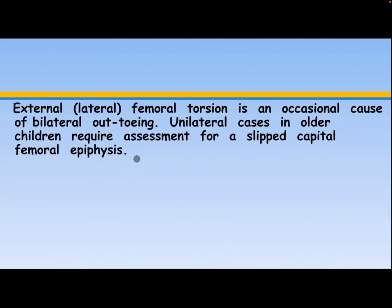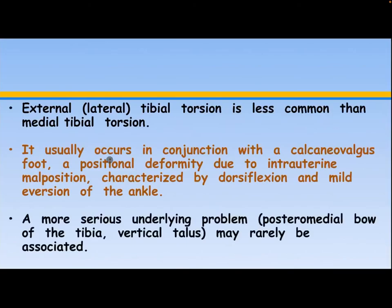External or lateral femoral torsion is an occasional cause of bilateral out-toeing. Unilateral cases in older children require assessment for slipped capital femoral epiphysis. External or lateral tibial torsion is less common than medial tibial torsion; it usually occurs in conjunction with the calcaneovalgus foot — a positional deformity due to intrauterine malposition characterized by dorsiflexion and mild eversion of the ankle. A more serious underlying problem, such as posteromedial bowing of the tibia or vertical talus, may rarely be associated.